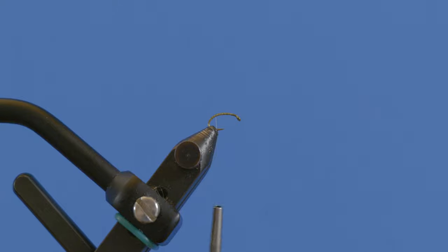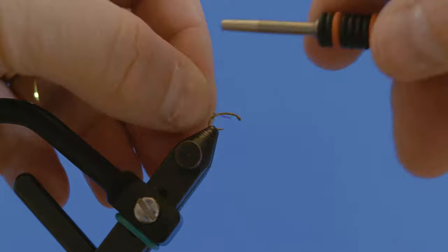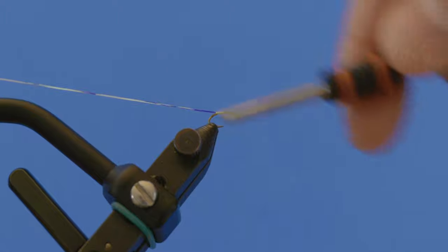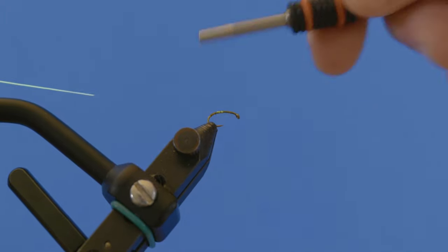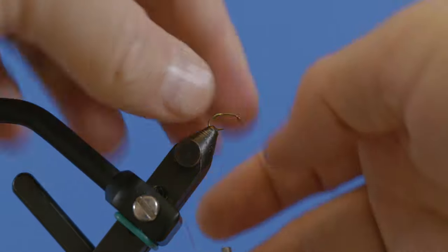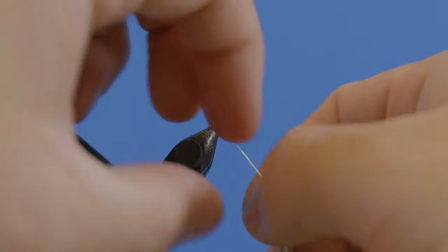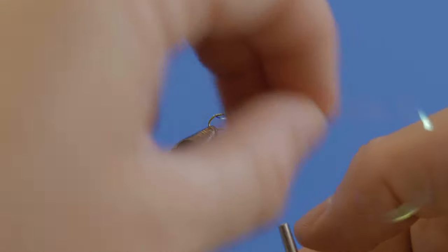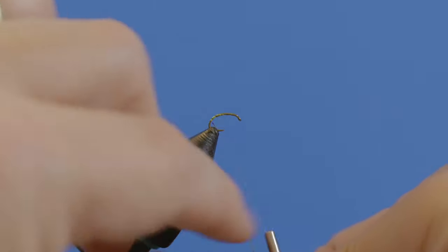I'm going to take a piece of Mirage tinsel and tie that in right there, capture that, kind of run back up the shank. This will just give like a little hot spot, not hot spot but kind of a little trigger point on this fly.